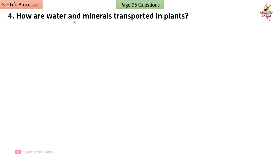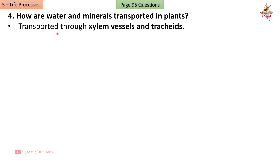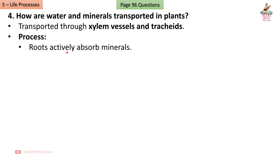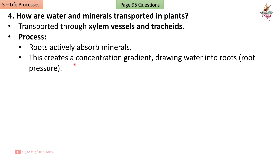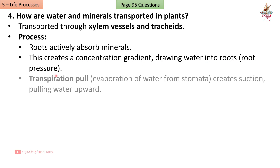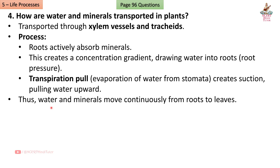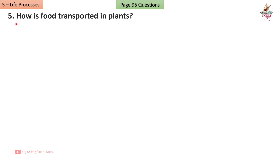Question 4: How are water and minerals transported in plants? Answer: Transported through xylem vessels and tracheids. Roots actively absorb minerals, creating a concentration gradient that draws water into roots (root pressure). Transpiration pull — evaporation of water from stomata creates suction, pulling water upward.